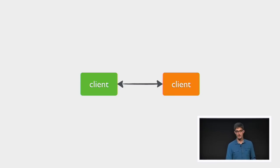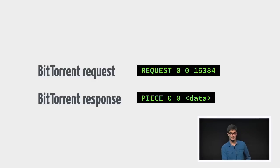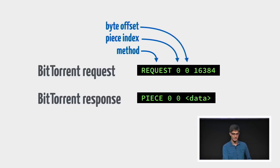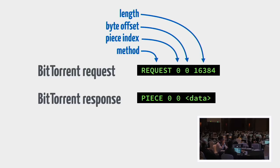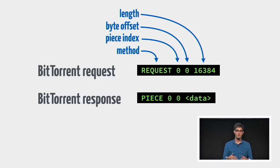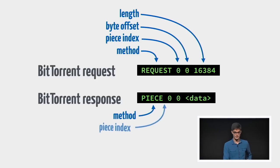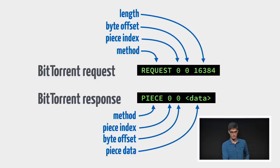When clients come later on and want this file, they connect to the client and make a request and get back a response. This is very similar to HTTP, except it uses a different protocol. We have a method, a piece index, a byte offset, and a length — similar to an HTTP range request. It's basically a way to say: I want this file but I only want this byte range, send me just this part. And similarly there's a response that confirms the piece of the file, the byte offset, and then the actual data.